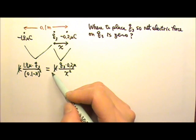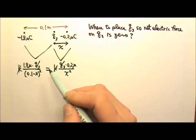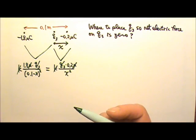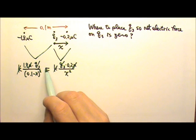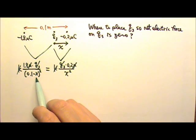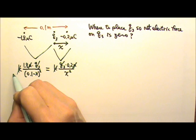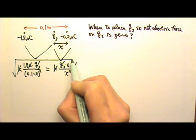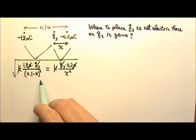So see the K's cancel, Q3's cancel, the micros also cancel. If now we cross multiply and solve for x, we're going to encounter a quadratic equation. Not so easy to solve. So what I'm going to do is I'm going to take square root first. This way I can avoid quadratic equation.